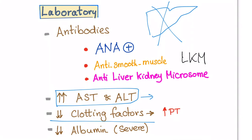In severe cases, when the liver — acting as a factory — is destroyed, clotting factors will decrease because they are produced in the liver, so prothrombin time will increase. Similarly, albumin will decrease because the liver is the source of albumin and it is now being damaged.